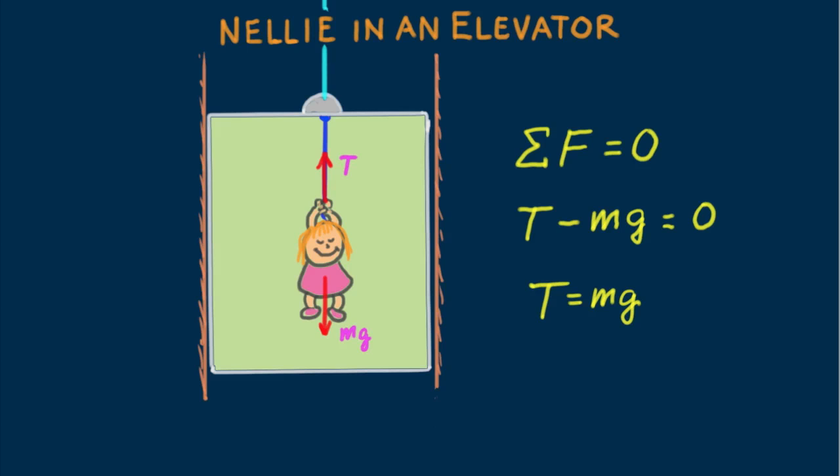Easy stuff. Would the tension change if the elevator moved at constant velocity? The answer is no, for then she'd be in dynamic equilibrium. As long as the system does not undergo acceleration, the sum of the forces on the system balance to zero. That's either at rest or moving at constant velocity.